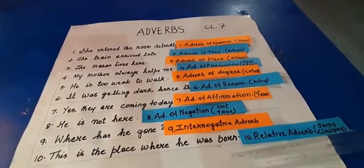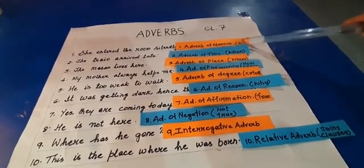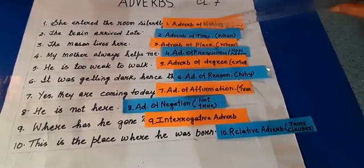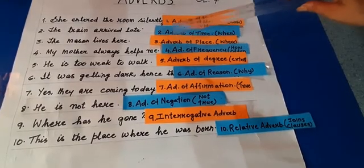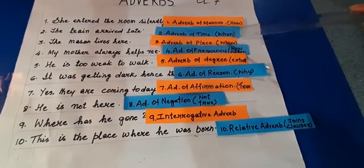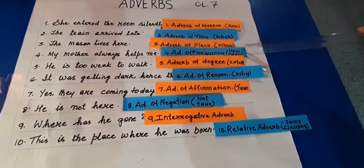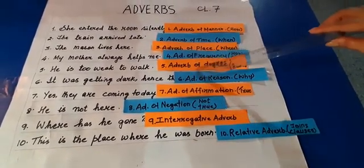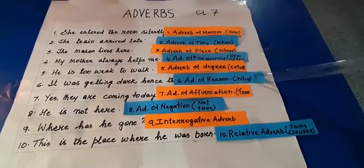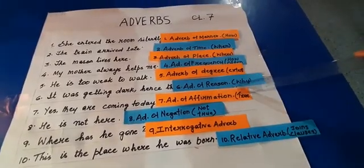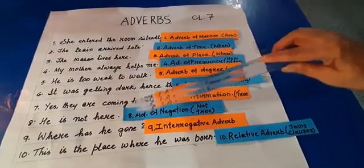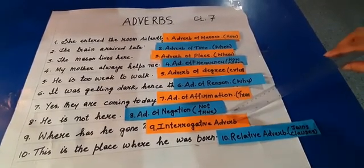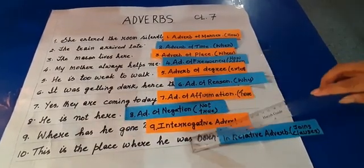Now let's see the kinds of adverbs that we have. We have an adverb of manner — ask the question 'how' to the verb and you will get the answer. Adverb of time — ask 'when.' Adverb of place — ask 'where.' Adverb of frequency — ask 'how often.' Adverb of degree — ask 'to what extent.' Adverb of reason — ask 'why.' Adverb of affirmation — tells you when something is true and definitely going to happen. Adverb of negation — not true, or something which is not going to happen. Interrogative adverb — asks a question. And a relative adverb joins two clauses.